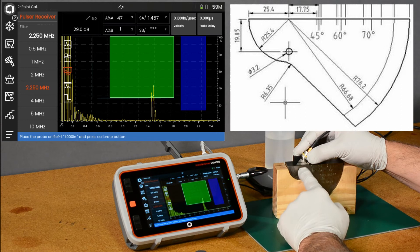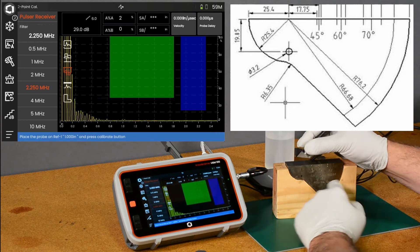and here's our echo from this 1-inch radius of the DSC block. Now the DSC block gives us a 1-inch radius and a 3-inch. If I turn the probe around and shoot this direction, I get 3-inch.